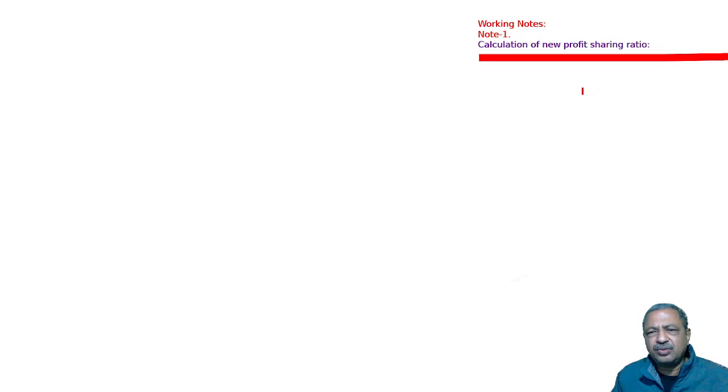A and B are partners in a firm. The net profit of the firm is divisible as follows: 1 half to A, 1 third to B, and 1 sixth is carried to reserve. Reserve is not a partner. So when admission happens of a new partner, the ratio will change. Only A and B's ratio half is to 1 third will remain.